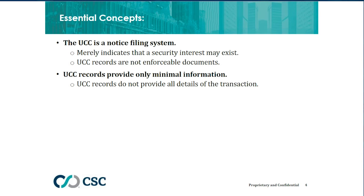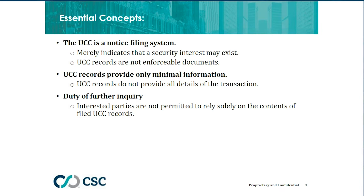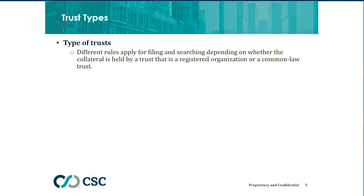Because the UCC doesn't require financing statements to provide all the details of the transaction, interested parties — those who search the records — are expected to look beyond the public record for the full state of affairs. They're not entitled to rely solely on the contents of the public record. Some other essential concepts are that there are multiple types of trusts, and depending on the type of trust, there could be different rules that apply to debtor name requirements, filing location, and things like that.